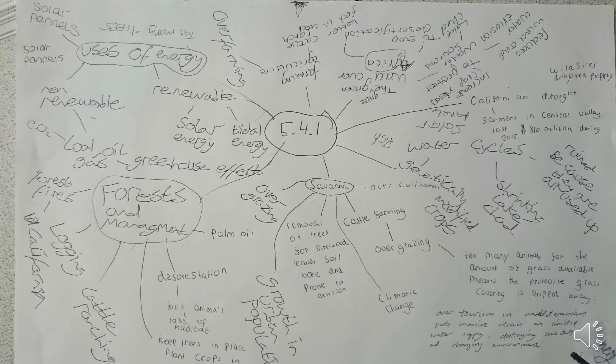We also use the environment for energy — for example, Gwynt y Môr off the coast of North Wales, providing clean electricity by harnessing the power of the wind. This is good because no coal, oil or gas is burnt, so there are no greenhouse gas emissions. However, some people think they look ugly, interfere with migration patterns of fish, and kill birds.